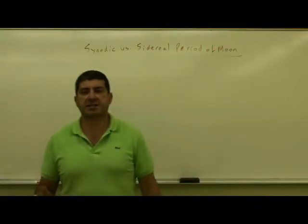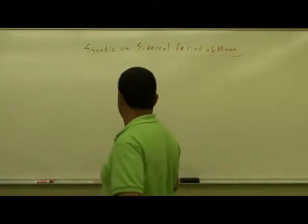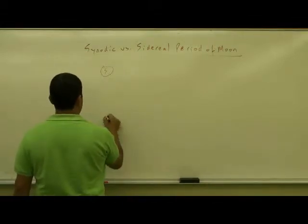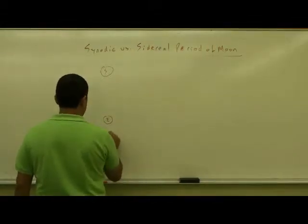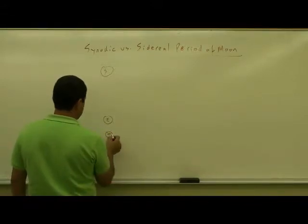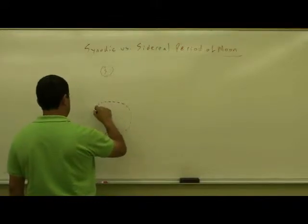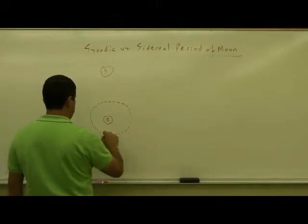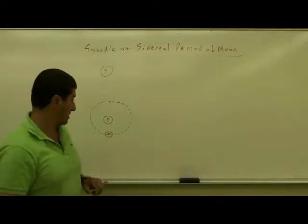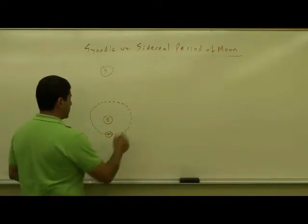So in astronomy we learned that the sidereal period of the Moon, basically this is the Sun and here is the Earth, let's say here's the Moon. The sidereal period is the time for the Moon to go around the Earth and come back to the same point that it began.